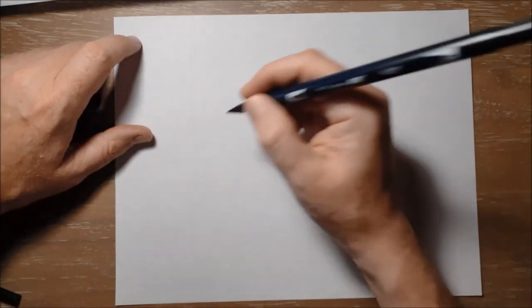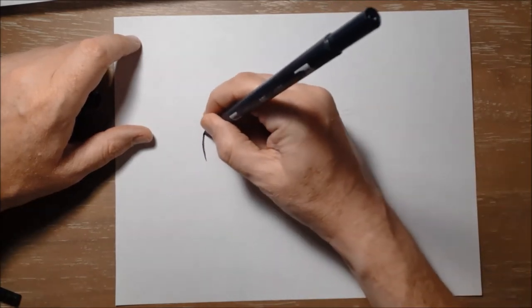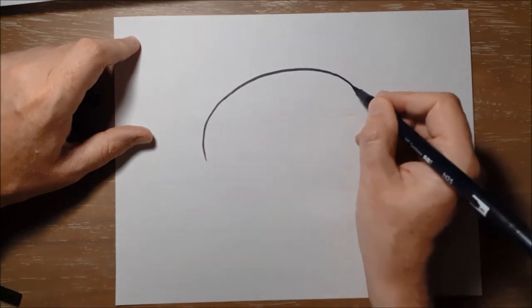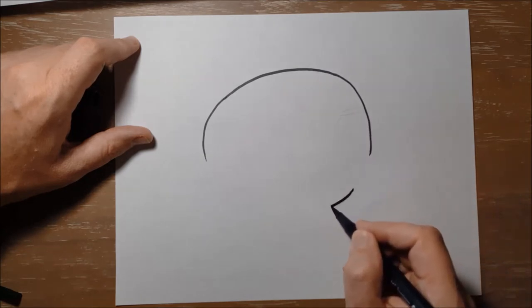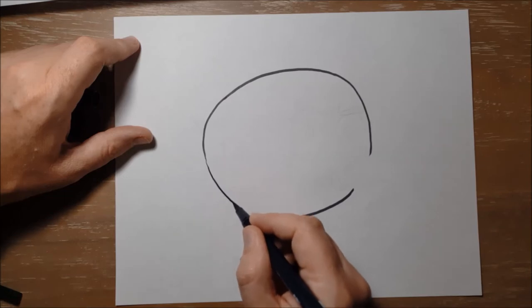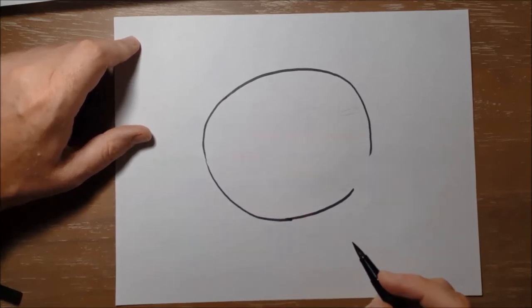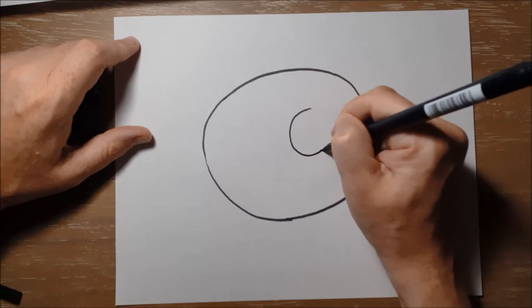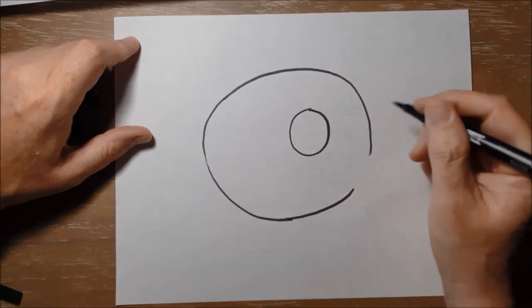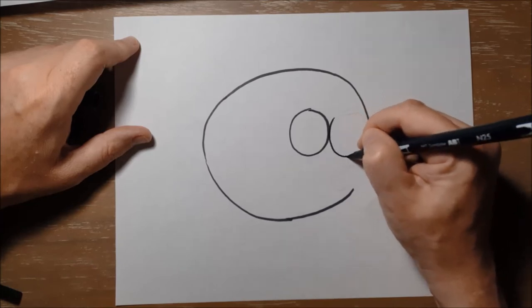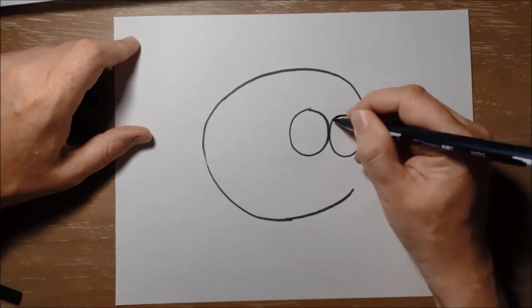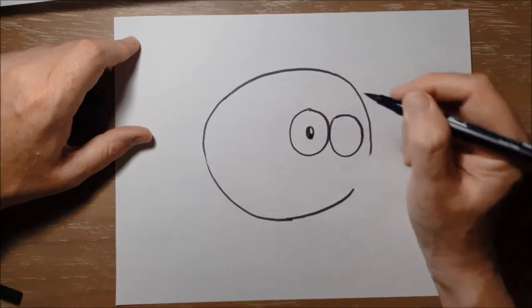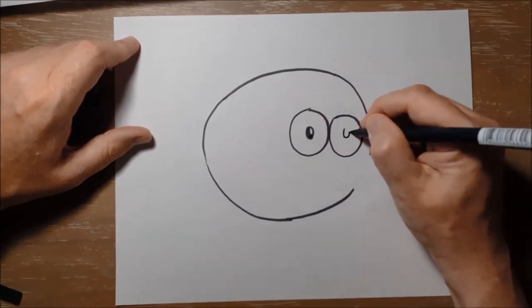First, we have to draw a big circle for the fish's body. Next, the fish has two eyes. One big circle, and another big circle. And inside the eyes, another circle, and one more circle.